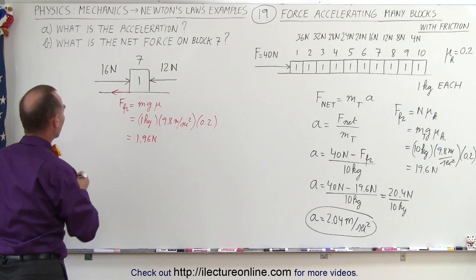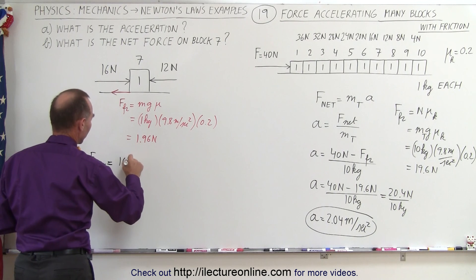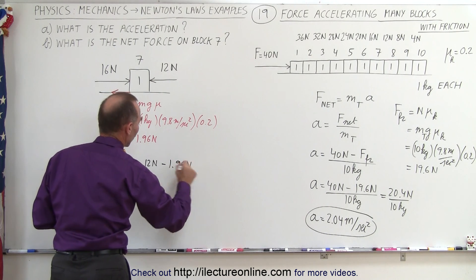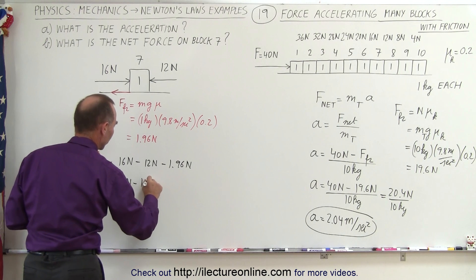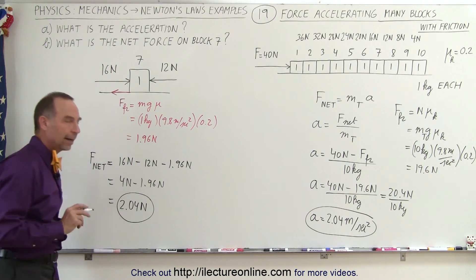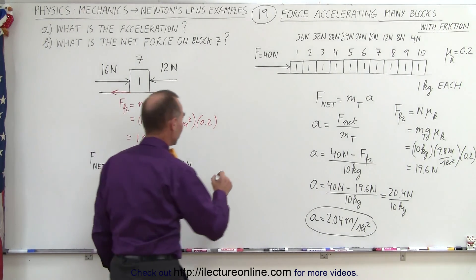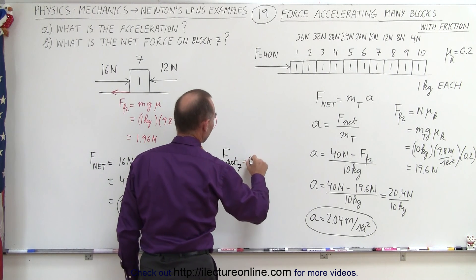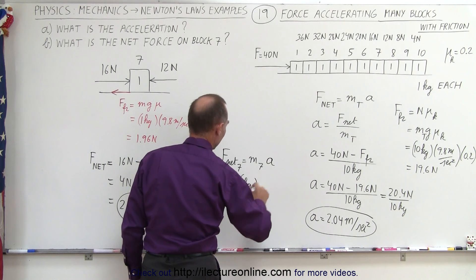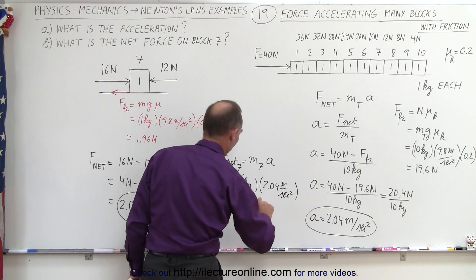Now you can see that the net force on that one block is going to be equal to 16 newtons pushing to the right, minus 12 newtons pushing to the left, minus 1.96 newtons to overcome friction. So this is 4 newtons minus 1.96 newtons, which equals 2.04 newtons — the net force on just that one block, and indeed the net force on each of the 10 blocks. Another way to find the net force is F-net equals M7 times acceleration: 1 kilogram times 2.04 meters per second squared equals 2.04 newtons.